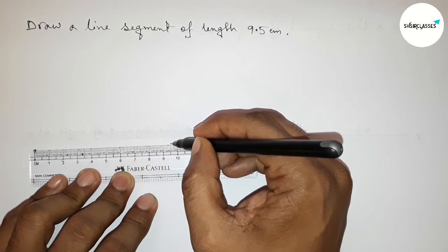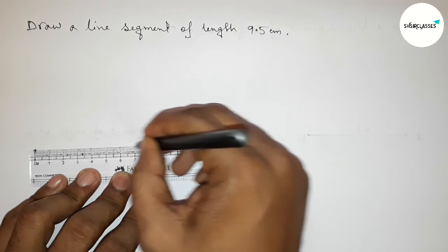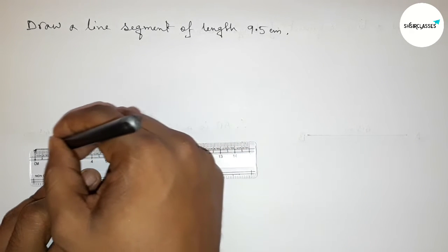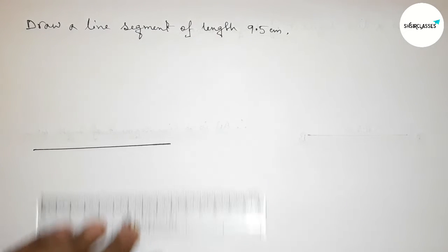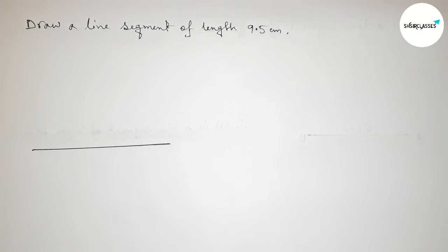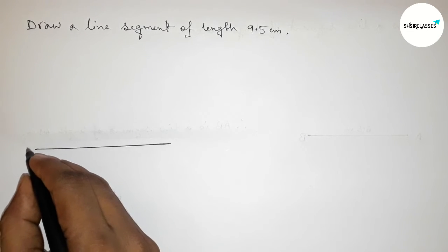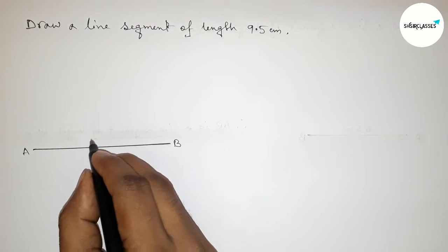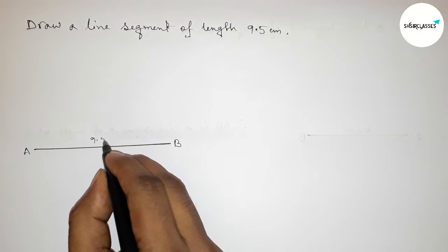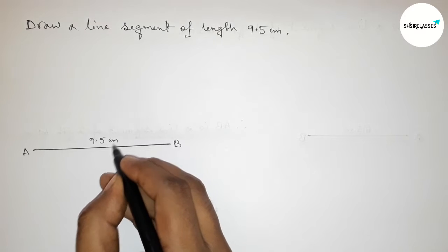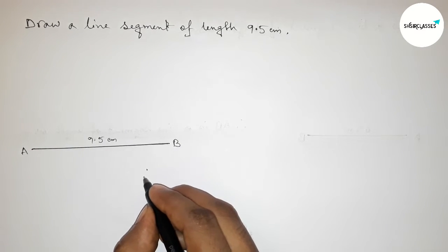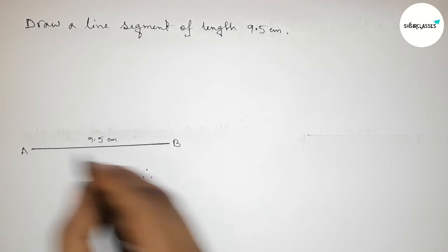Okay, so perfectly join the line. Then now taking here point A and here B. So AB is a line segment of 9.5 centimeter. Therefore, here now we can say that AB is a line segment of length 9.5 centimeter.